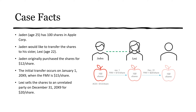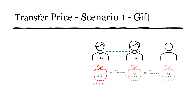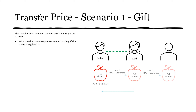The first scenario is if the shares are gifted — that is, the transfer price is zero. What are the tax consequences to each sibling? For Jayden, he'll have proceeds of disposition of $1,500 (100 shares × $15). His adjusted cost base is $1,200 (100 shares × $12), leading to a capital gain of $300 and a taxable capital gain of $150.